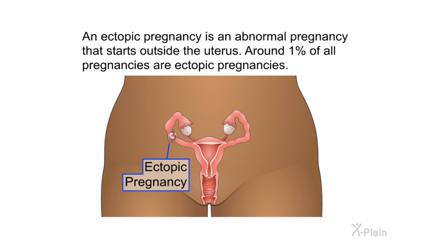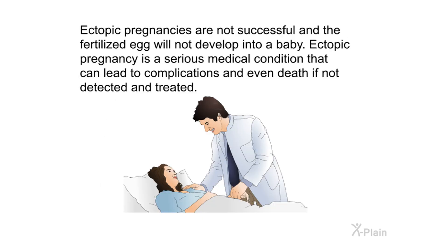Ectopic pregnancy introduction. An ectopic pregnancy is an abnormal pregnancy that starts outside the uterus. Around 1% of all pregnancies are ectopic pregnancies. Ectopic pregnancies are not successful and the fertilized egg will not develop into a baby. Ectopic pregnancy is a serious medical condition that can lead to complications and even death if not detected and treated.